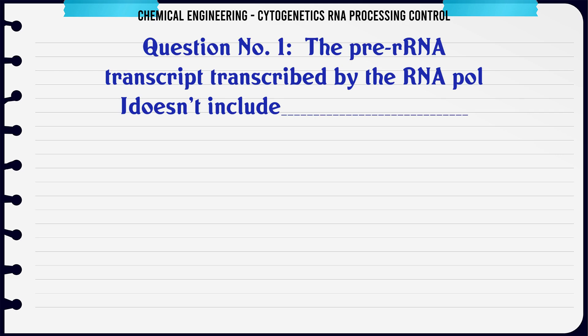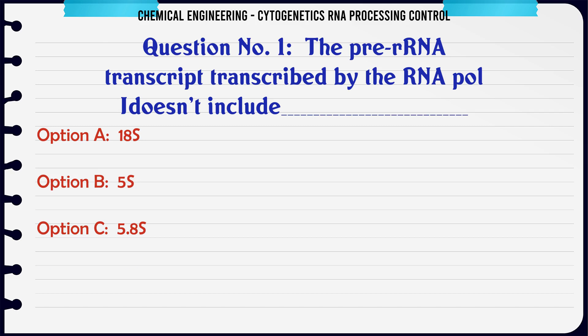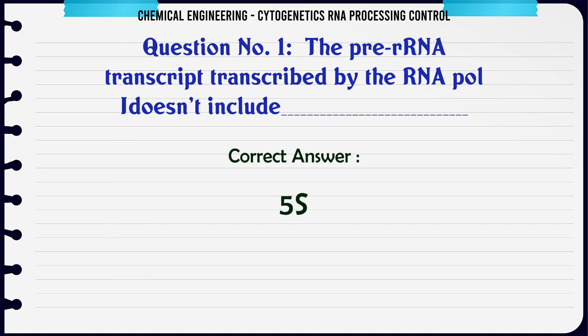The pre-rRNA transcript transcribed by RNA Pol A does not include: A. 18S, B. 5S, C. 5.8S, D. 28S. The correct answer is 5S.